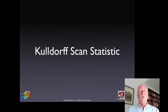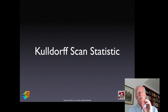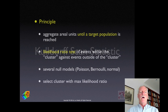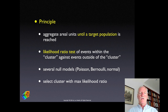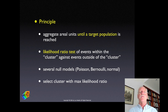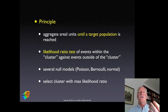The Kulldorff scan statistic is by far the better known of the two. It still scans each county in turn and increases the circle, but now it aggregates units until a target population is achieved — not a target number of events, but a target population at risk. Rather than computing a p-value, it computes a likelihood ratio comparing the odds inside the cluster to the odds outside.